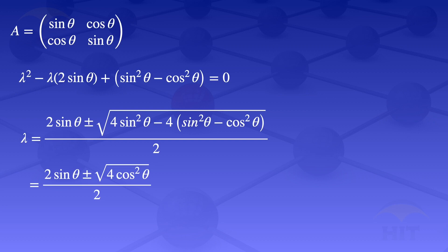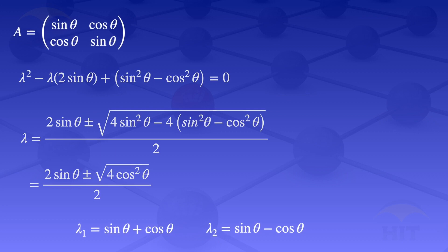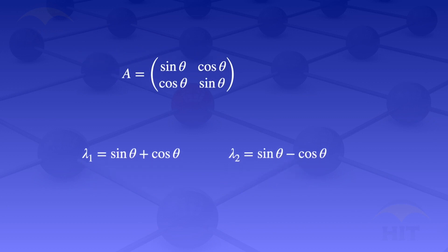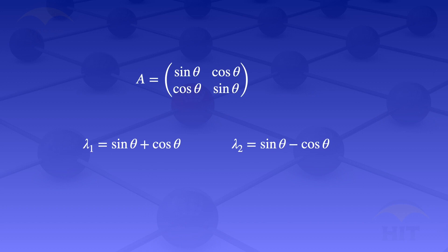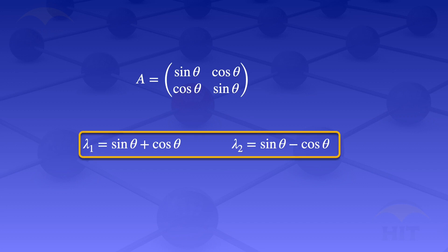The square root of 4 cos²θ is 2 cos θ. Taking the positive sign gives λ₁ = (2 sin θ + 2 cos θ) / 2 = sin θ + cos θ, and the negative sign gives λ₂ = sin θ − cos θ. So for the matrix A with elements sin θ, cos θ, cos θ, sin θ, the two eigenvalues are sin θ + cos θ and sin θ − cos θ.